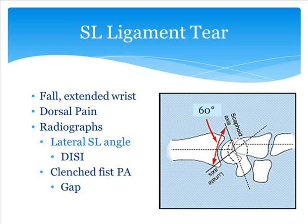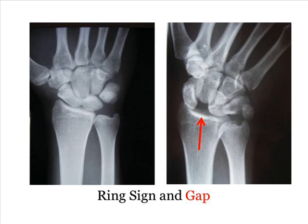With this type of tear, the lunate and scaphoid shift, and by this shifting, this angle increases. Normally we see an angle of 40 to 60 degrees, and with an injury that angle will be over 60 degrees. Radiologists may term that a DISI malalignment — that just refers to the fact that the lunate now tilts dorsal. Another way to look at injuries to the scapholunate ligament is on the standard PA radiograph, where you'll see a gap. In these two PA views, you see on the right a significant gap between the two bones, which represents the torn ligament.